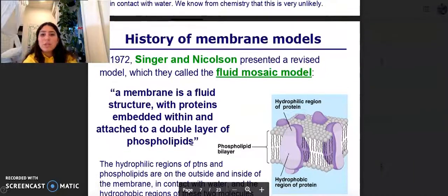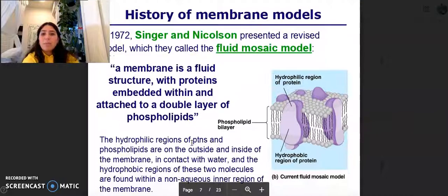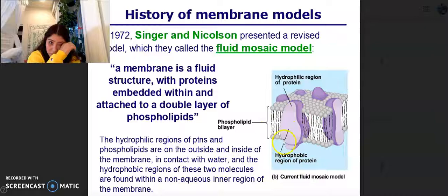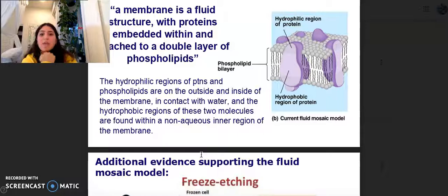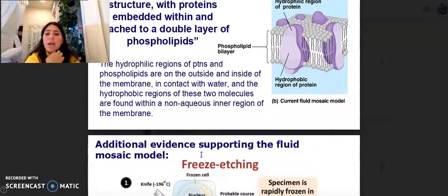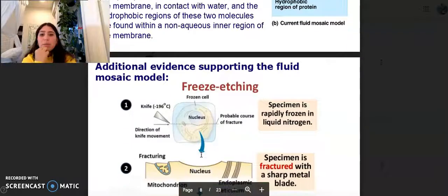We know from chemistry that that is very unlikely. In 1972, Singer and Nicholson presented a revised model, which they called a fluid mosaic model. A membrane is a fluid structure with proteins embedded within and attached to a double layer of phospholipids. So phospholipid bilayer, hydrophilic region of protein, hydrophobic region of protein. The hydrophilic regions of proteins and phospholipids are on the outside and inside of the membrane in contact with the water, and the hydrophobic regions of these two molecules are found within non-aqueous inner regions of the membrane.